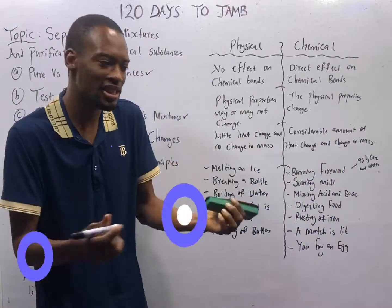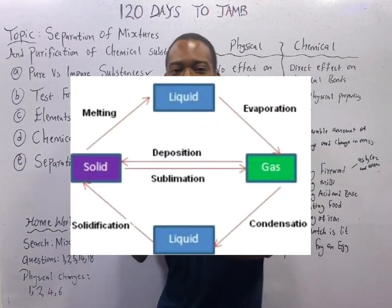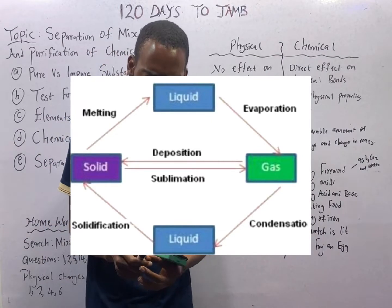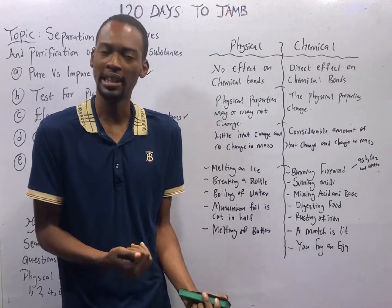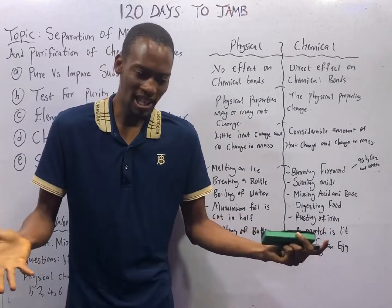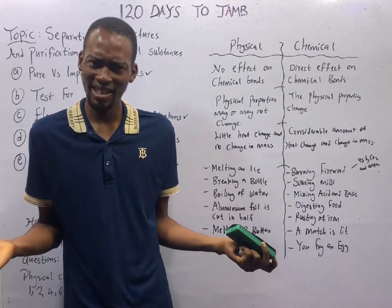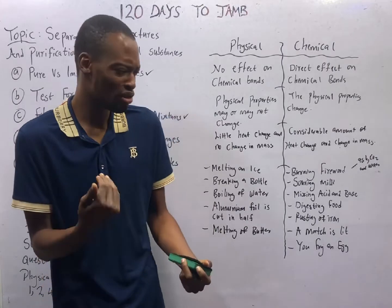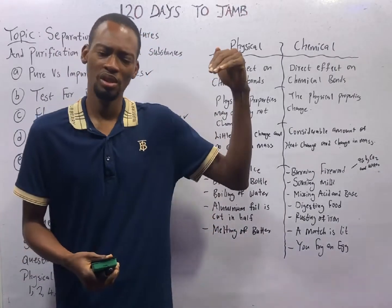It is a physical change when no new substance is formed. For example, when you boil water it turns to vapor, or you put water in your freezer and it turns to an ice block — it still remains water. The identity remains; identity doesn't change. So in that case, it is a physical change — no new substance is formed. But in chemical change, new substances are formed.